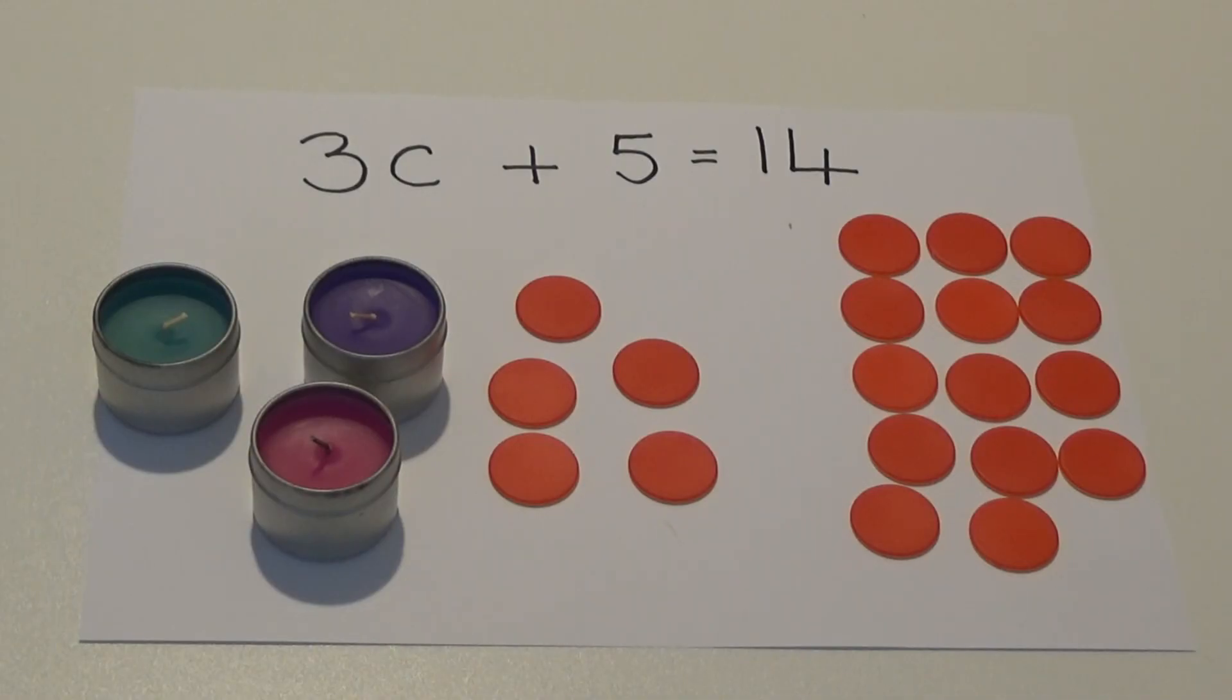We want to work out how many counters 1 candle is equal to. To do this, we want to start by working out how many counters the 3 candles on their own are equal to. We start by taking the 5 counters on the left side away.